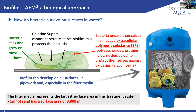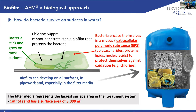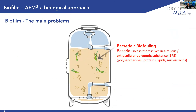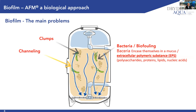Bacteria may grow already in the filter media — that's actually one of the biggest growth potentials upstream of the RO membranes when you use media filtration. One cubic meter of sand has a surface area of 3,000 square meters. In conventional filter media, bacteria foul the media, start to grow, build clumps, and this leads to channeling. These channeling events can occur and disappear, but happen very frequently in sand filters or sand and anthracite filters.